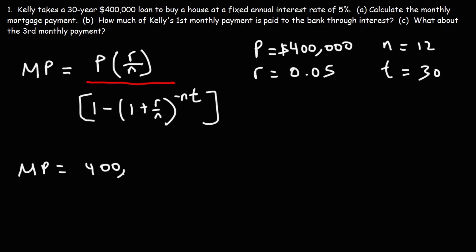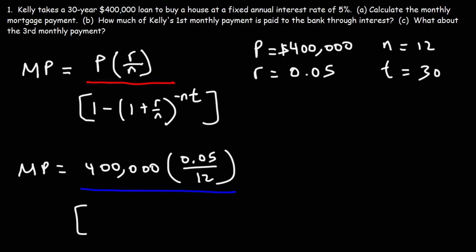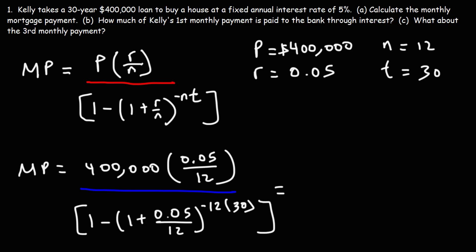Now let's plug everything into the formula. The numerator is 400,000 times R, which is 0.05, divided by 12. That comes out to 1,666.6 repeating.